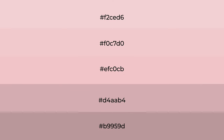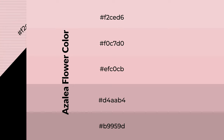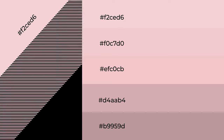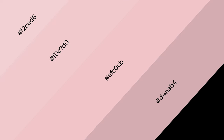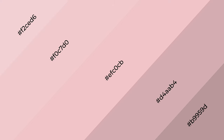To generate shades of a color, we add black to the color, and it is used in patterns and 3D effects. Layers and shades create depth and drama. Azalea flower is a warm color and it emits cozier and active emotions.